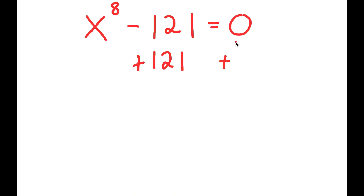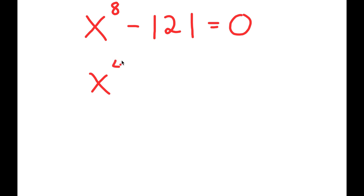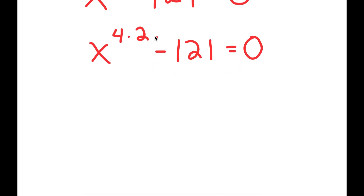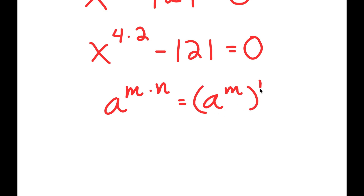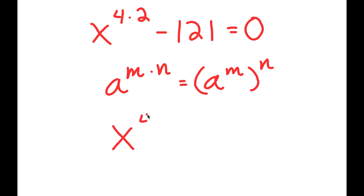So how are we going to do that? Our first step is to rewrite x to the power of 8 as x to the power of 4 times 2. Now if I have something in the form a to the power of m times n, this is equal to a to the power of m to the power of n. So x to the power of 4 times 2 is equal to x to the power of 4, to the power of 2. Now I have this minus 121, which we can rewrite as 11 to the power of 2.